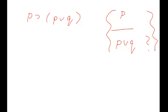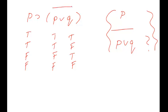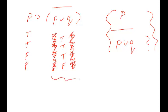Running the truth table: P is T, T, F, F and Q is T, F, T, F. P∨Q always comes out T, T, T, F — you probably knew that already. So we have T, T, T, F as the value for P∨Q and T, T, F, F as the value for P.